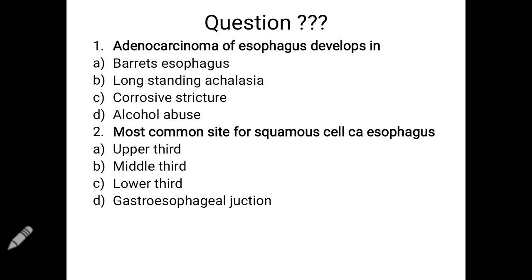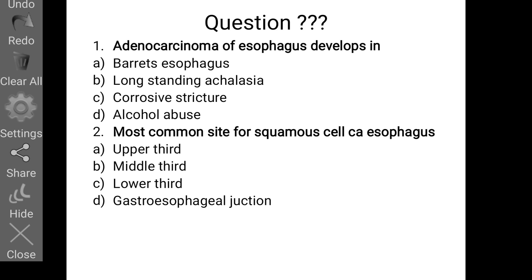Exam question 1: Adenocarcinoma of the esophagus develops in — Barrett's esophagus, long-standing achalasia, corrosive stricture, or alcohol abuse? The answer is Barrett's esophagus (para-esophageal Barrett's). Long-standing achalasia, corrosive stricture, and alcohol abuse are associated with squamous cell carcinoma, not adenocarcinoma.